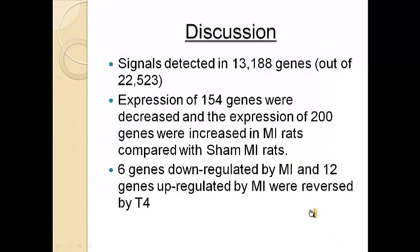Signals were detected in 13,188 genes out of a possible 22,523. The expression of 154 genes were decreased and the expression of 200 genes were increased in the MI rats compared to the control MI rats. Six genes down-regulated by MI and 12 genes up-regulated by MI were reversed by T4.